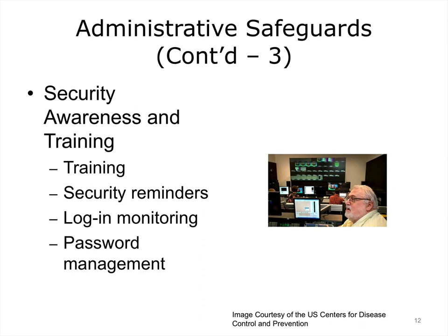The fifth administrative safeguard, security awareness and training, dictates that a health organization must implement a security awareness and training program for all members of its workforce, including management. Many safeguards require cooperation from the workforce to be effective. For example, the use of authentication controls — usernames and passwords — is a very common security safeguard that allows a system to uniquely identify users and limit access based on role. This safeguard is completely defeated if users share their passwords. Training needs to make clear why certain security safeguards must be followed, how to follow them, and what the sanctions are if they are not. Security awareness may also be accomplished with login monitoring, such as reporting failed login attempts, and password management policies to prevent sharing of passwords and specify when and how to change them.